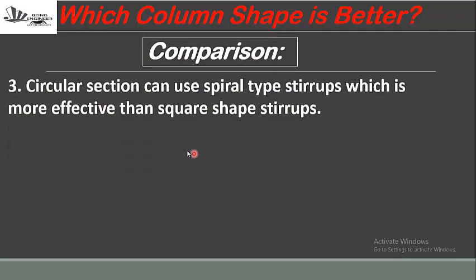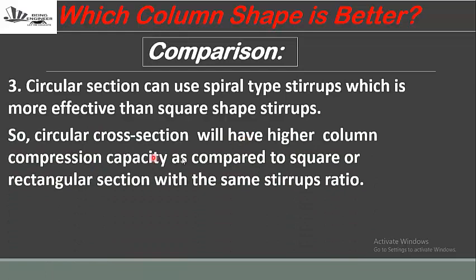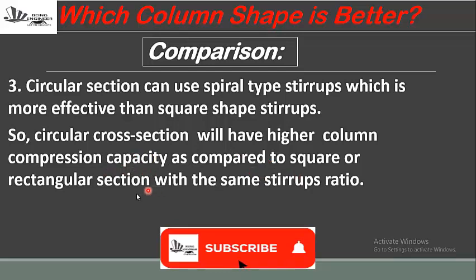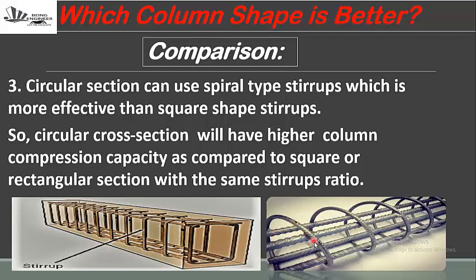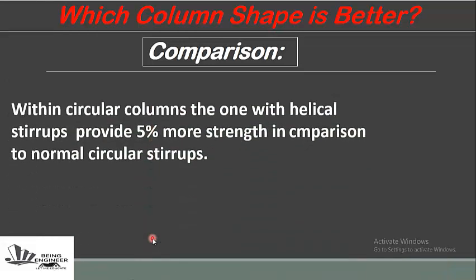The next point: circular sections can use spiral-type stirrups, which are more effective than square-shape stirrups. A circular cross-section will therefore have a higher column compression capacity compared to square or rectangular sections with the same stirrup ratio. Within circular columns, those with helical stirrups provide 5% more strength in compression compared to normal circular stirrups.